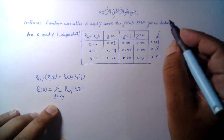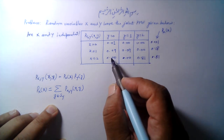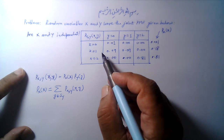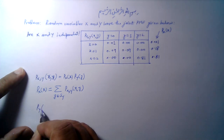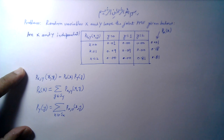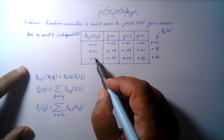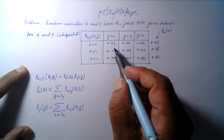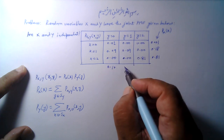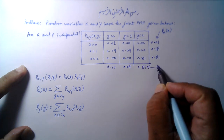Likewise, to find the marginal PMF of random variable Y, we sum the probability values for all values of X corresponding to a given value of Y — summing over all X in S_X of P_{X,Y}(x, y). So for Y equal to 0 we sum all probability values in that column, giving 0.10. For Y equal to 1 this is 0.09, and for Y equal to 2 this is 0.81.